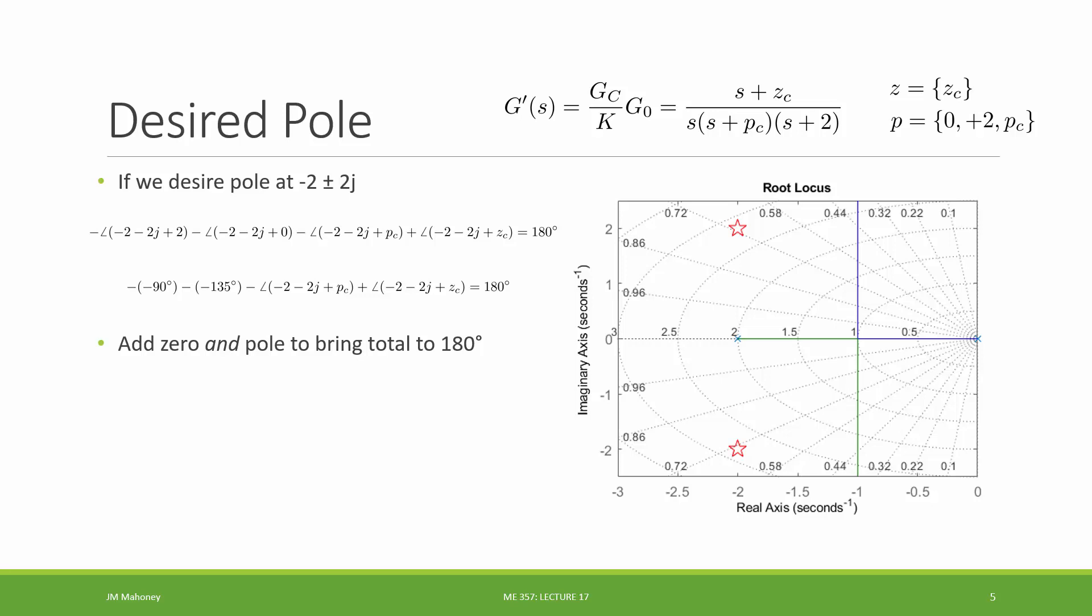I could have used a right-hand side of negative 180 or any odd multiple, and that would be okay. So if I move the 90 and the 135 to the other side, I am left with negative 45 on the right-hand side. And now on the left-hand side, I'm left with two terms from the pole I'm going to select in my controller and the zero I'm going to select in my controller. So unlike in the PD controller where there was a unique solution because at this point I had one unknown, the zero, and one equation,